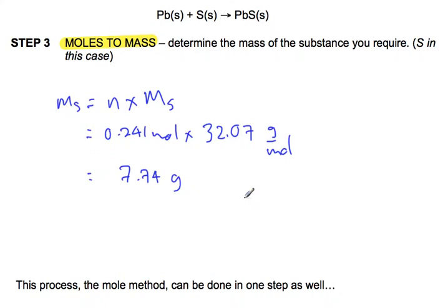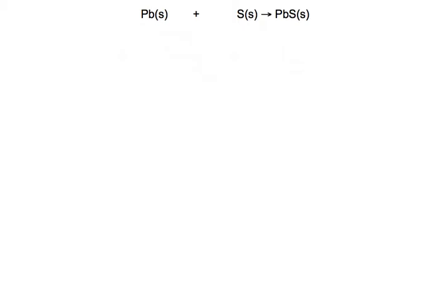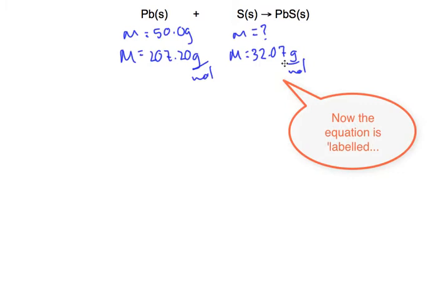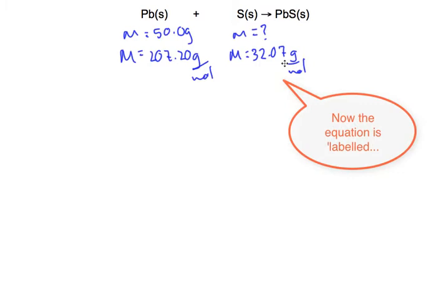You can put this together into one step. I'd also like to introduce a concept I call labeling the equation. There's our balanced equation. What information do we have? We're given the mass of lead — 50.0 grams — and we'll need the molar mass of lead, so I've labeled those with lead in my equation. We're also looking for a mass of sulfur, and for that we'll need the molar mass of sulfur, so I've included that too. This way I have all the information I need in front of me and can set up a word or symbol equation, a substitution, and a solution.